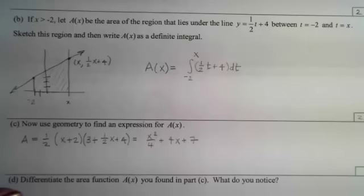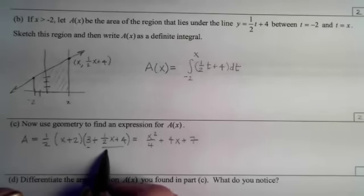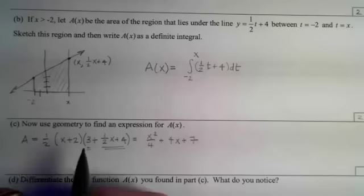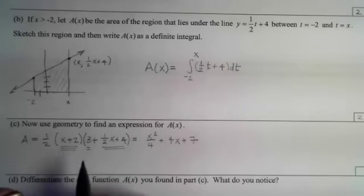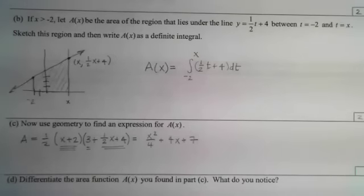You get one point for the correct base lengths, another point for the correct height, and your final point for computing A(x).